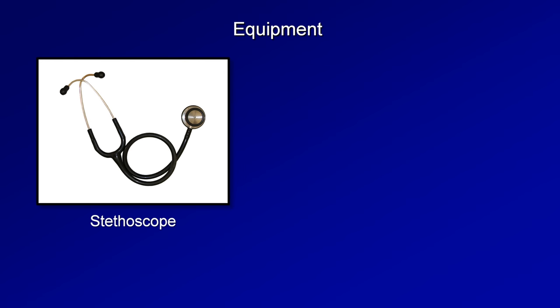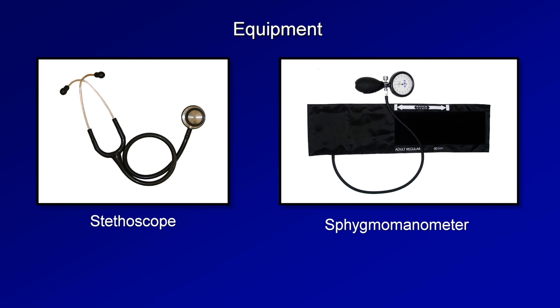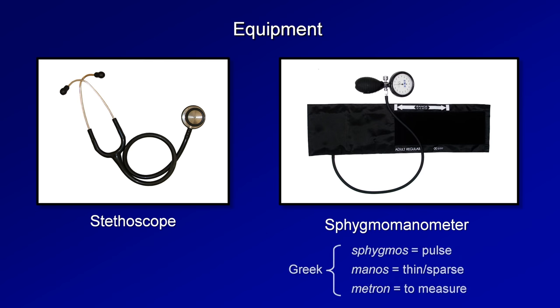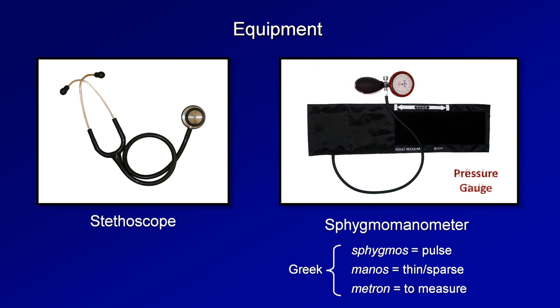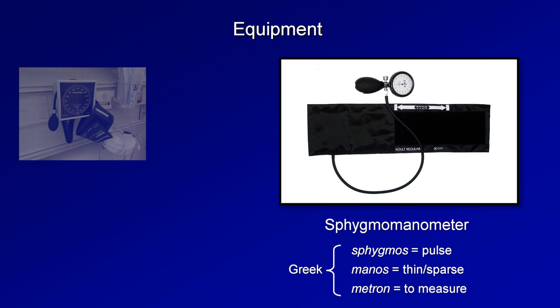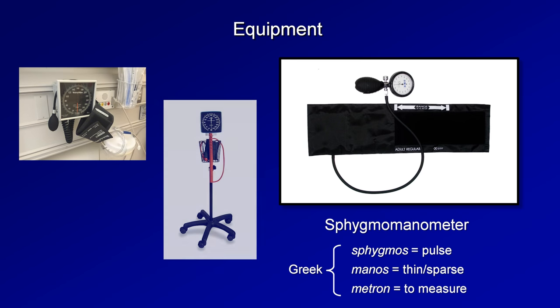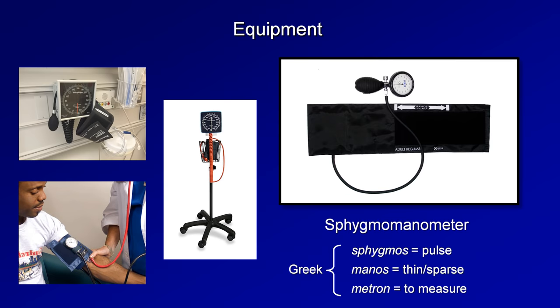The equipment for blood pressure measurement is very simple: a standard stethoscope and something called a sphygmomanometer. Most people colloquially call this a blood pressure cuff, which is a misnomer since the cuff is only part of it — specifically the part that goes around the patient's arm. The other parts of the sphygmomanometer include the pressure gauge, the inflation bulb used to inflate the cuff, and a one-way valve which can be twisted to regulate the flow of air from the cuff, controlling its rate of deflation. Depending on your equipment, the gauge may be either mounted on the wall, attached to a small rolling stand, or be small enough to be hooked directly onto the cuff itself.